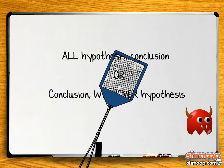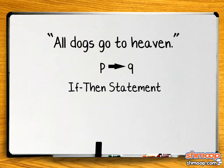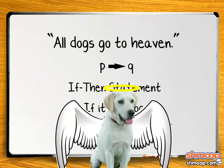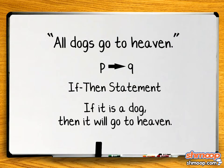How can we write 'all dogs go to heaven' in P→Q form? Well, first let's write it as an if-then statement. 'All dogs go to heaven' means that if we're talking about a dog, then it will go to heaven. We want to put that statement in P→Q form, which looks like this.